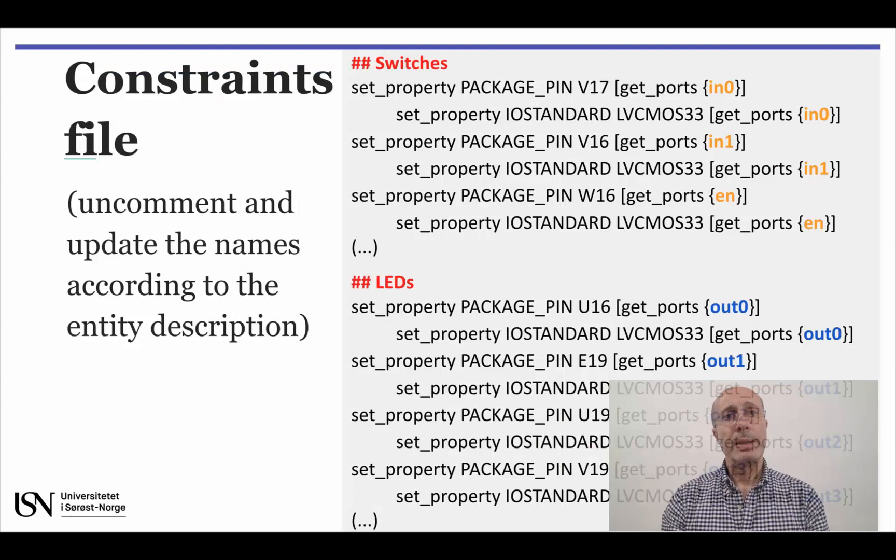We will now need the third type of file required by VIVADO to complete the project. The so-called Constraints file associates the inputs and outputs of our design with the physical pins of the FPGA. Digilent provides a master constraints file that lists all the device pins.